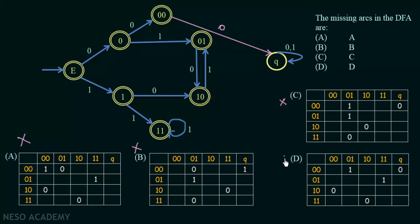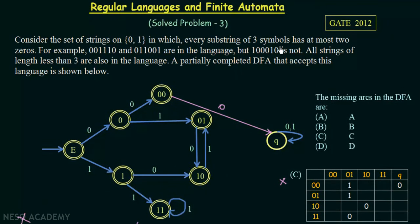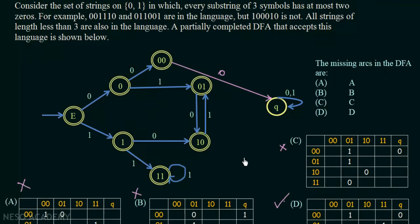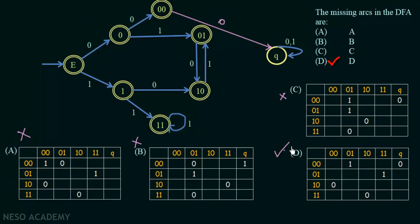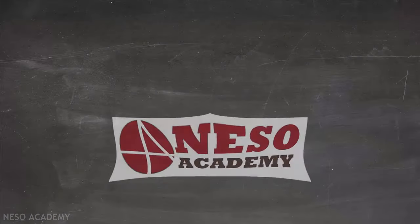Since options A, B, and C are all wrong, the only remaining option is D. Option D is the correct answer. If we apply option D and draw the missing arcs, the DFA will satisfy the condition that every substring of three symbols has at most two zeros, and the DFA will be complete. The correct option for this question is option D.